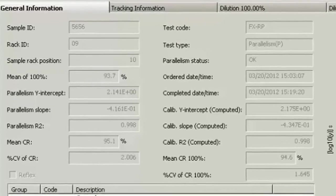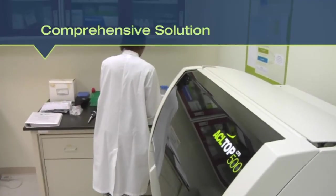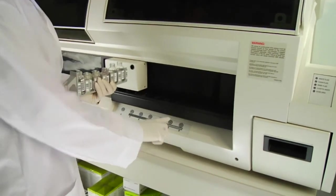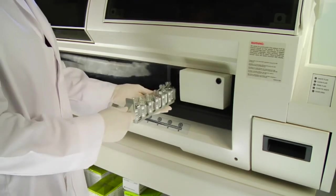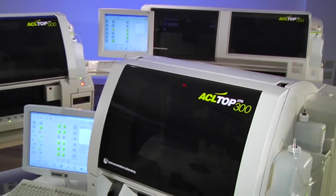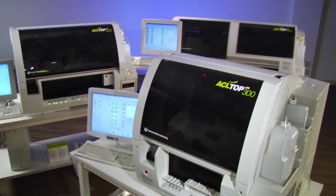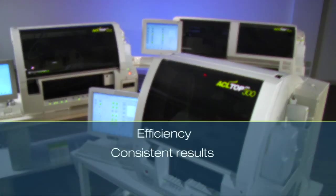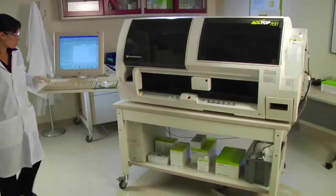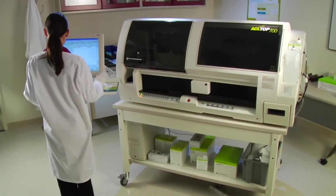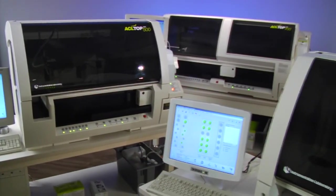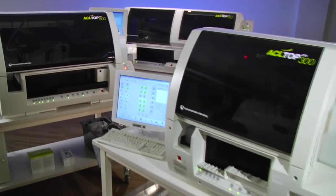The ACL top family of testing systems represents a unique solution for a wide variety of hemostasis labs, whether routine or specialty with low to high volume, spanning a broad spectrum from the ACL top 300 to the 700. This standardized platform offers unmatched efficiency and consistent quality results, all of which translates into a more cost-effective operation for labs of all sizes, including integrated laboratory networks. Designed and manufactured by Instrumentation Laboratory, the ACL top family will meet the most demanding requirements of any hemostasis testing lab or network of labs today and in the future.